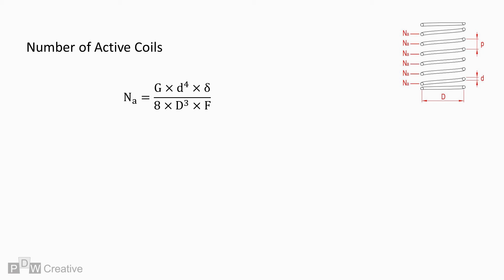Number of active coils can be calculated as follows: Number of active coils equals modulus of rigidity times wire diameter to the power of 4 times deflection over 8 times mean diameter to the power of 3 times force.